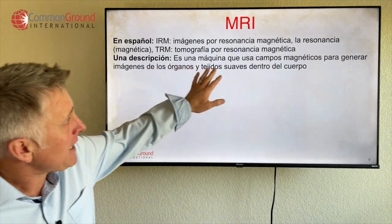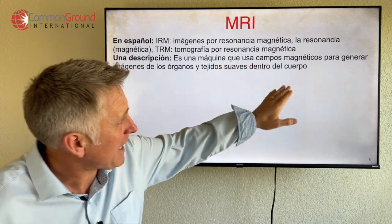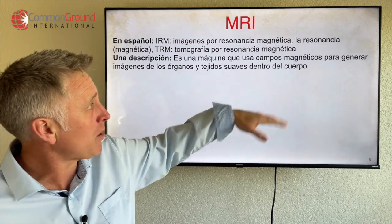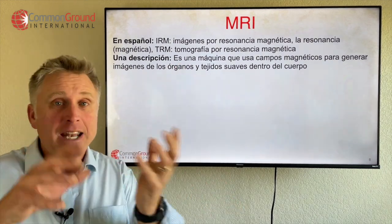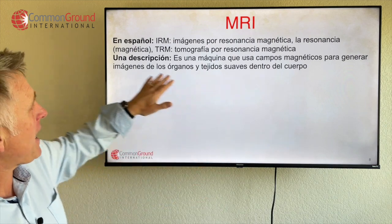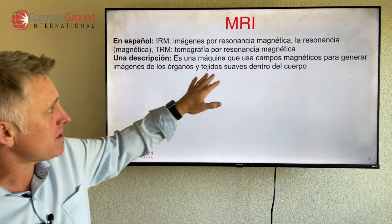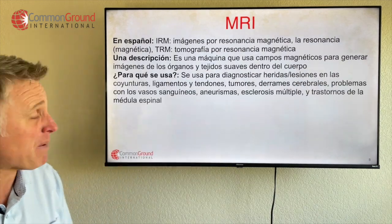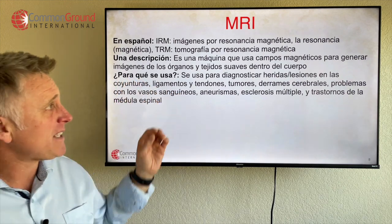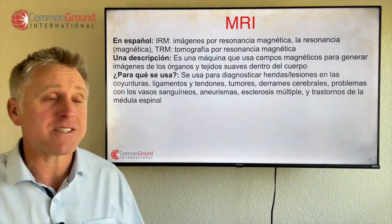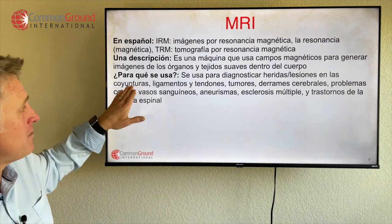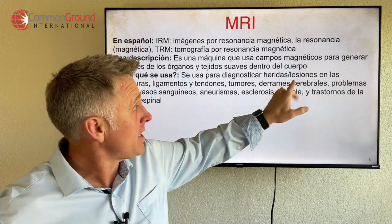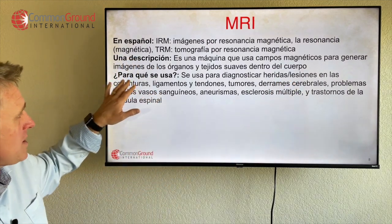Es una máquina que usa campos magnéticos para generar imágenes de los órganos y tejidos suaves dentro del cuerpo — so it's a machine that uses magnetic fields to generate images of the organs and soft tissues inside the body. ¿Para qué se usa? Se usa para diagnosticar heridas o lesiones en las coyunturas — so it's to diagnose injuries in the joints.